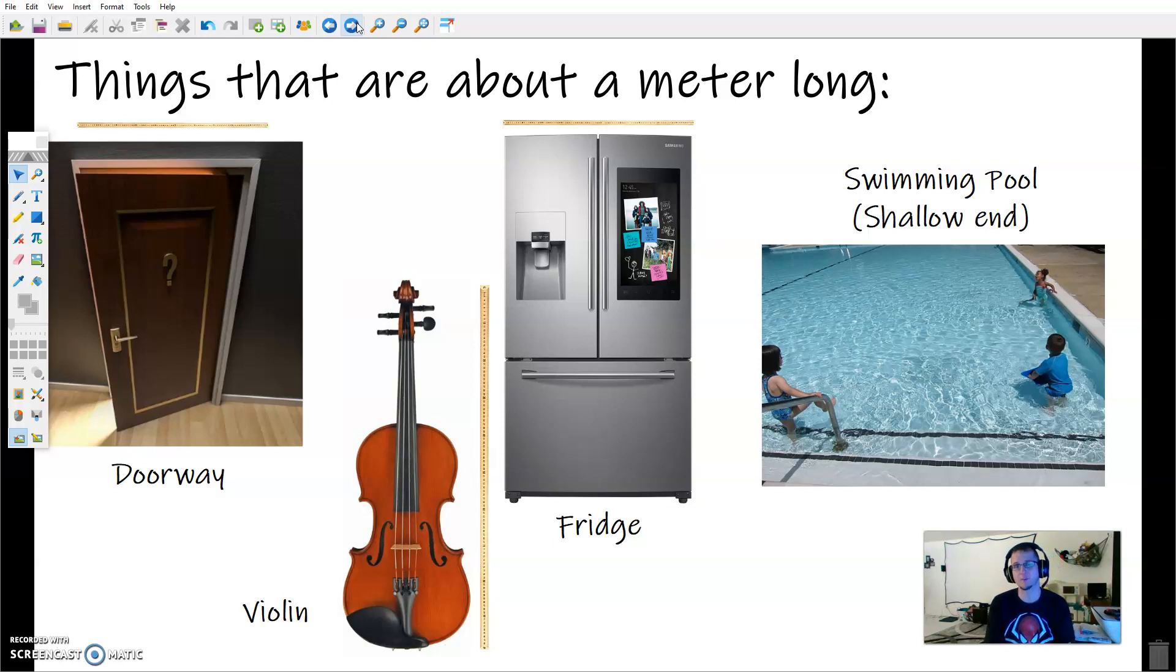Obviously, depending on the doorway, violin, fridge, and then swimming pool as we get to it, the shallow end of a swimming pool is about a meter deep. Now, obviously, there's some pools that taper all the way out, but when you're looking a little bit more than that three feet, 39 inches or so, would be about your meter deep in the shallow end of the pool.